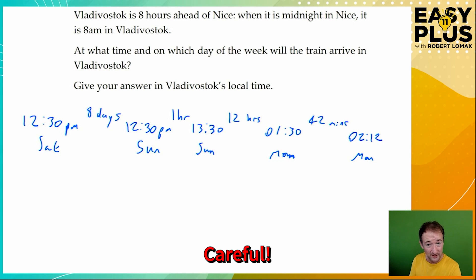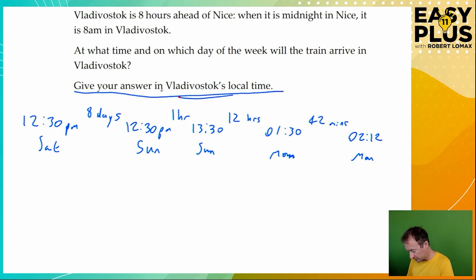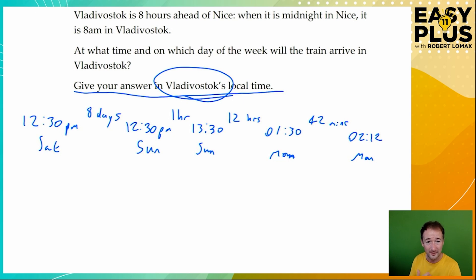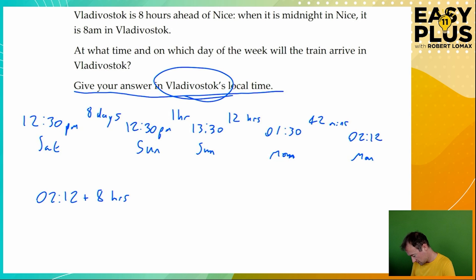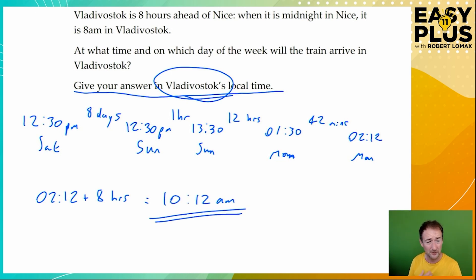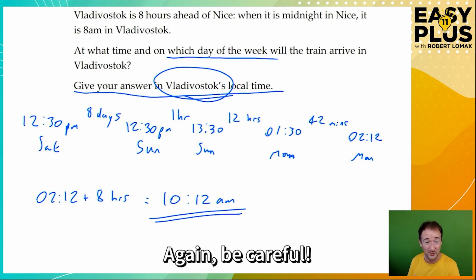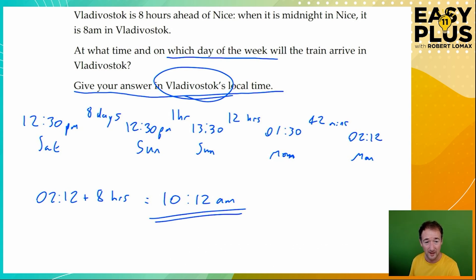However, we are still in Nice time and the question wants us to give our answer in Vladivostok's local time. We've learned from the question that Vladivostok is eight hours ahead of Nice. So when it's midnight in Nice, it's 8 a.m. in Vladivostok. So if it's 2:12 in the morning in Nice, it's 10:12 in the morning in Vladivostok. Notice it's important to put a.m. because when you write something like 10:12, it isn't clear whether you're in 24-hour or 12-hour format. We also have to indicate which day of the week — always check back at the question to make sure you haven't missed anything. From our working, the day is Monday.